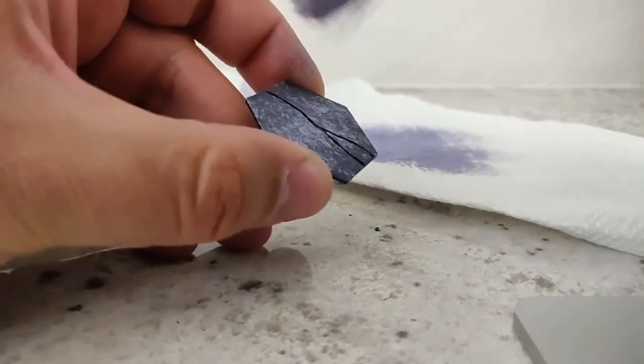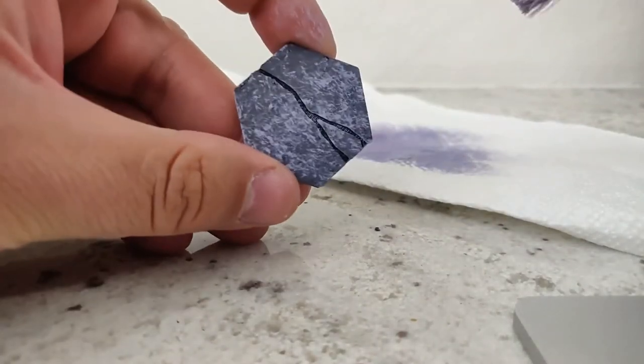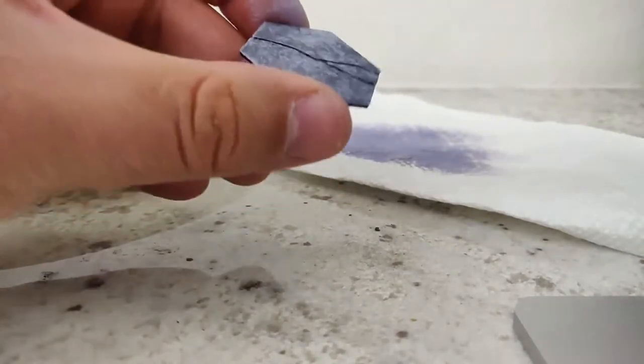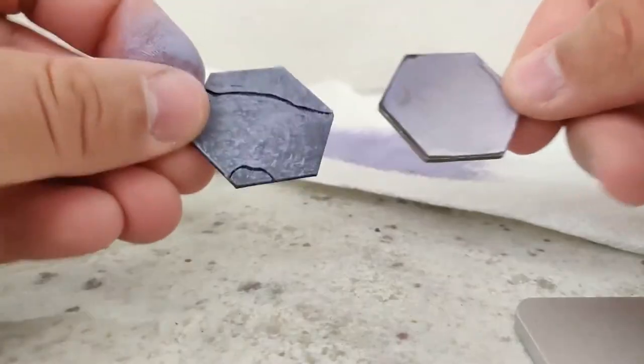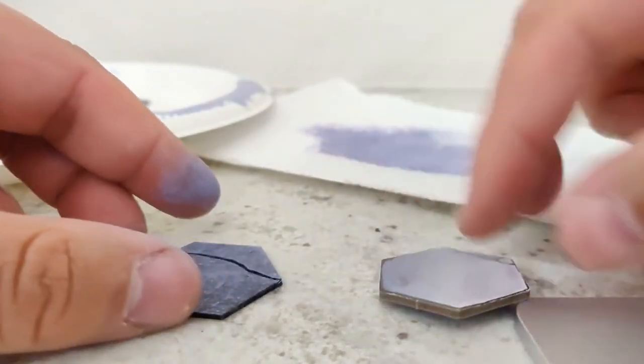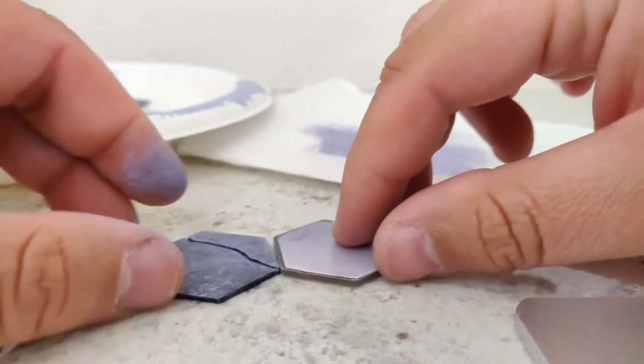This one gives it that stone texture where it has that texture from the bristles kind of being smooshed against the tile. And this is what we end up with when it's all dry. It's a pretty close match. There you go.